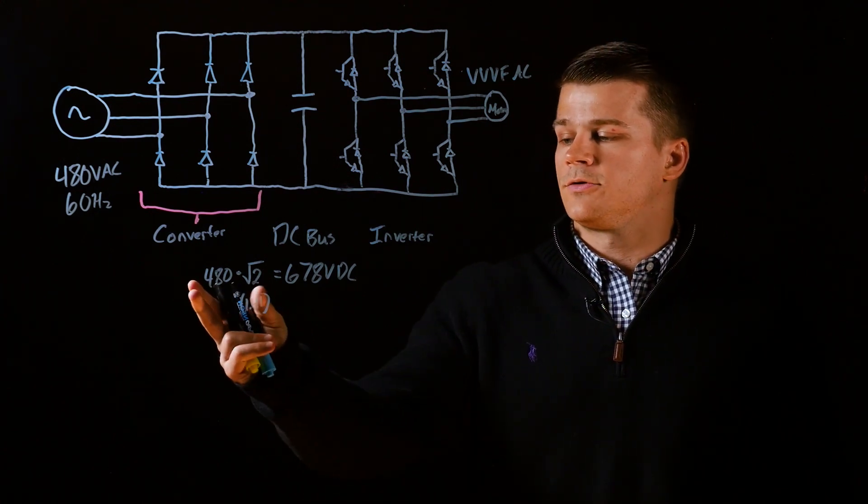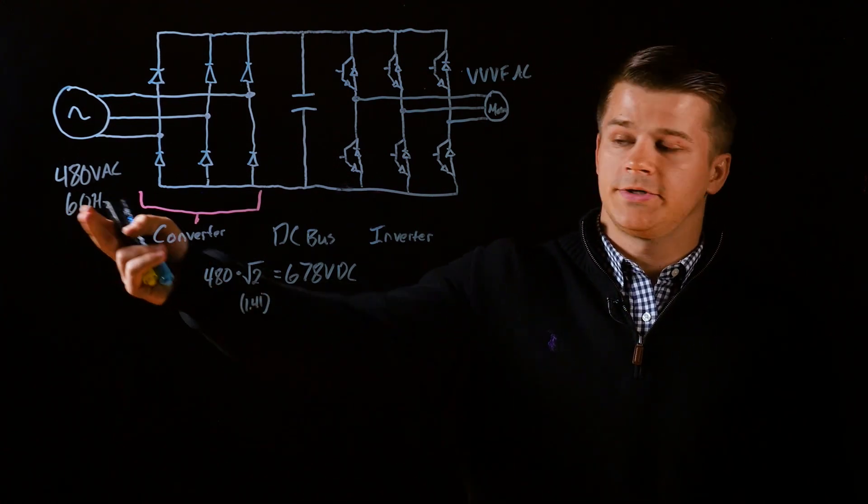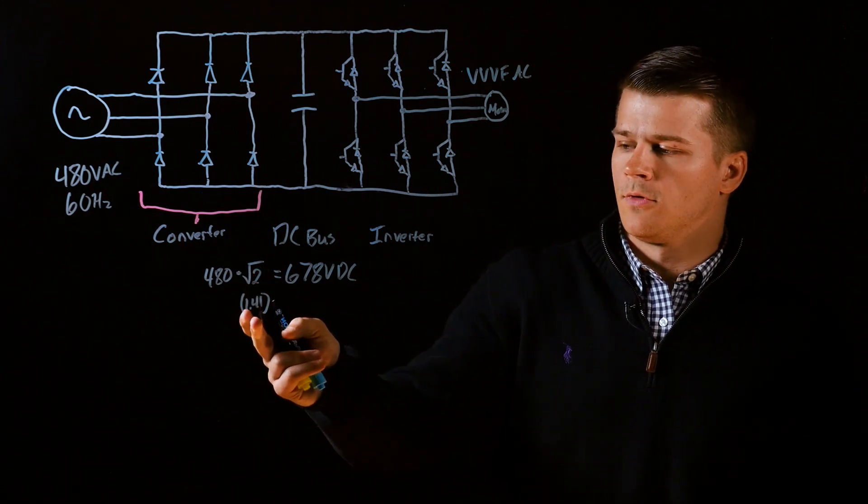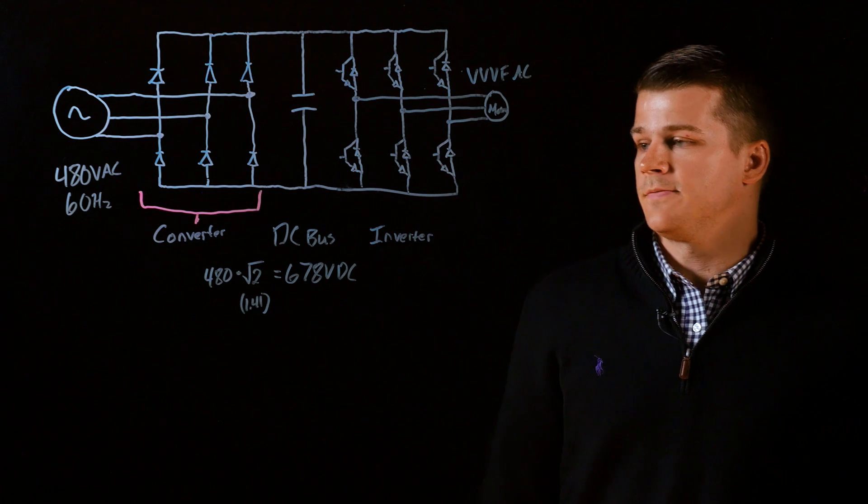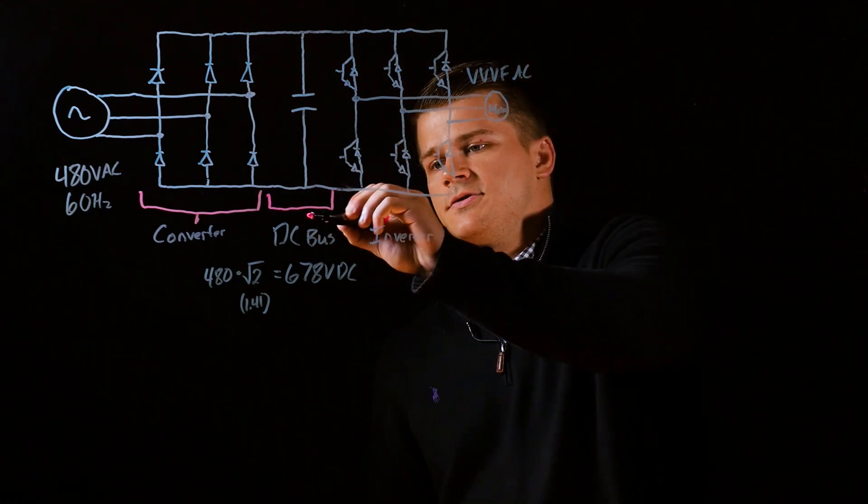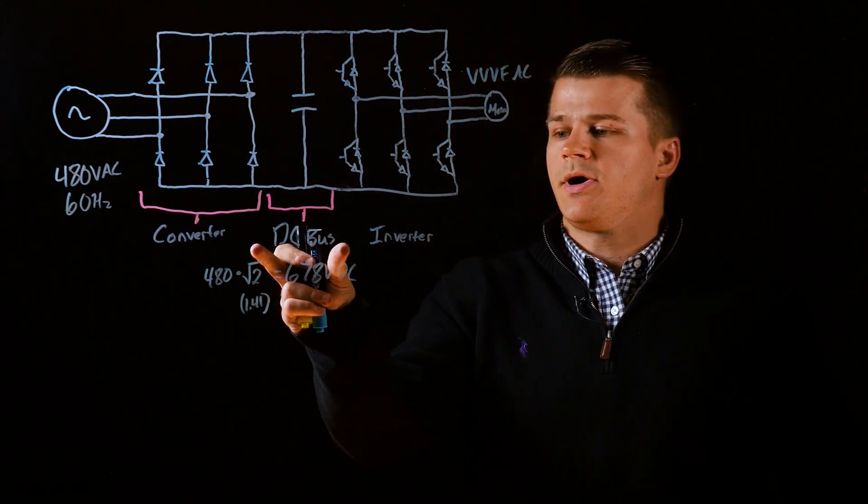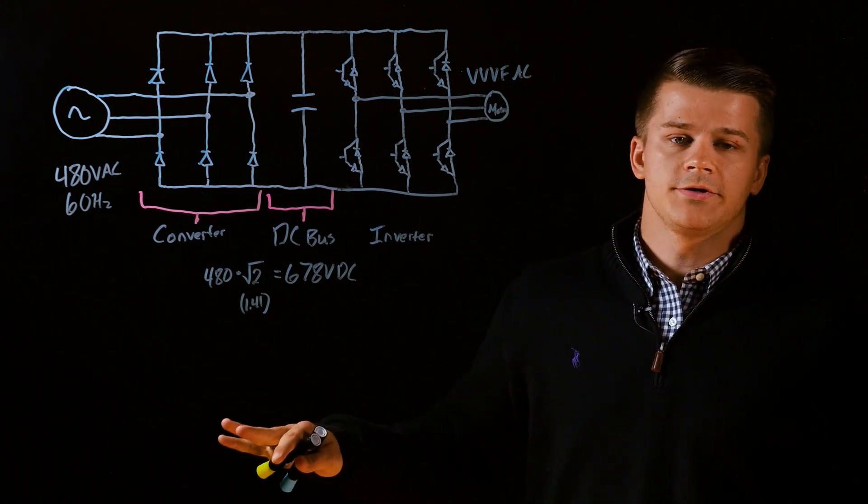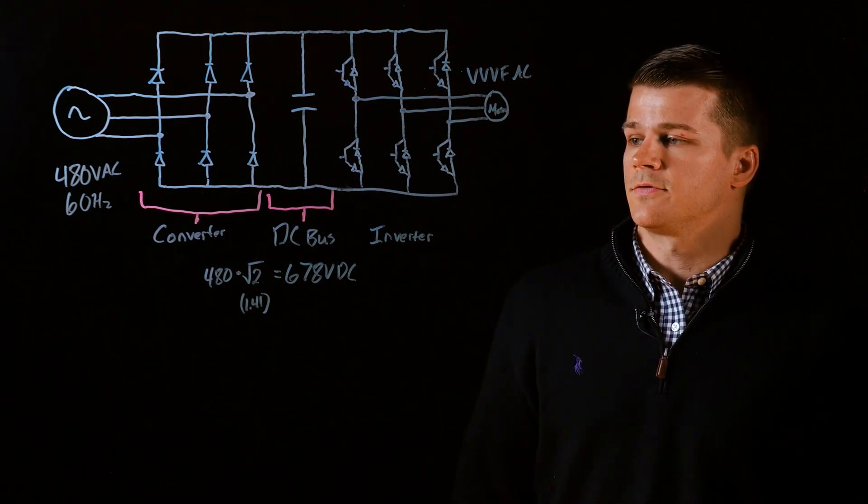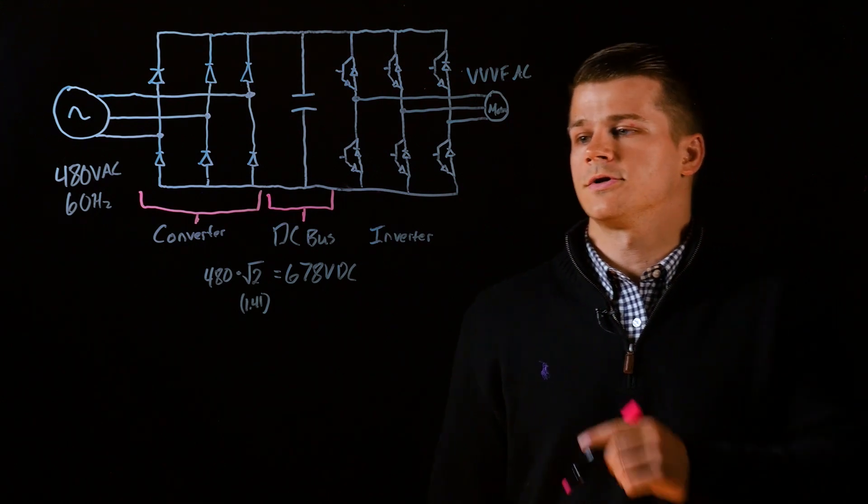So your DC voltage will be 480 volts, your input times the square root of 2 or 1.41, which leads to 678 volts DC. And that leads us to the next section which is the DC bus. That is a capacitor bank that allows you to smooth out your DC voltage and allows for some voltage storage capacity.